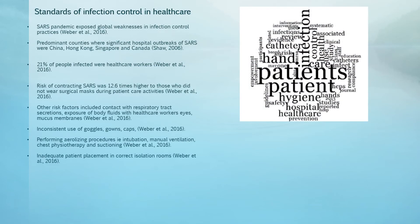The poor reporting of this pandemic had a roll-on effect towards infection control in healthcare settings. The SARS outbreak showed what happens to countries when they are not prepared for newly emerging infectious diseases. Transmission of SARS within healthcare facilities was predominantly seen in China, Hong Kong, Singapore and Canada. The SARS pandemic exposed weaknesses in infection control processes. Approximately 21% of people infected with SARS were healthcare workers. Risk of transmission was 12.6 times higher for healthcare workers who did not wear masks. Other risk factors included contact with respiratory secretions, exposure of body fluids with mucous membranes, performing aerolising procedures such as ventilation, chest physio and suctioning, and inadequate patient placement in isolation rooms.